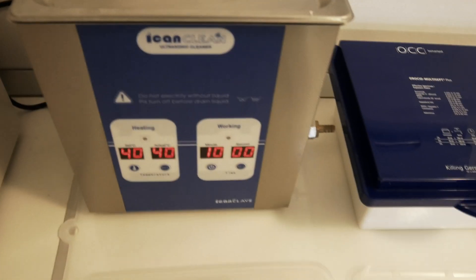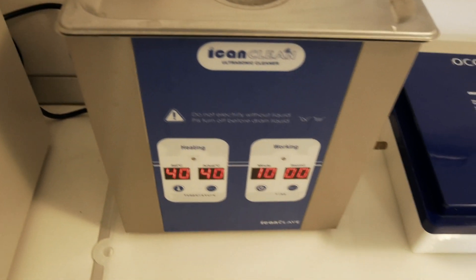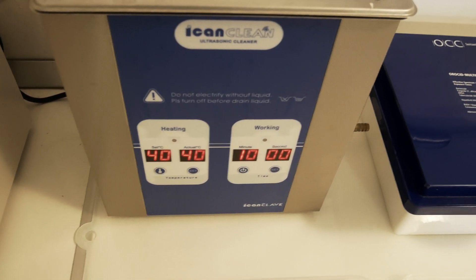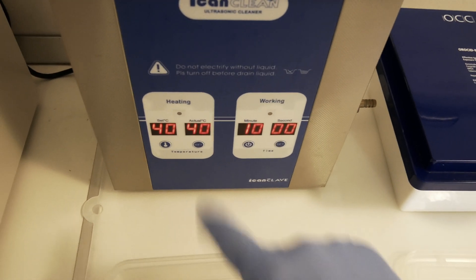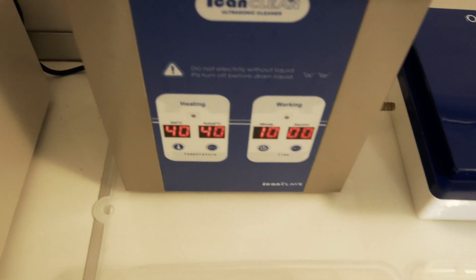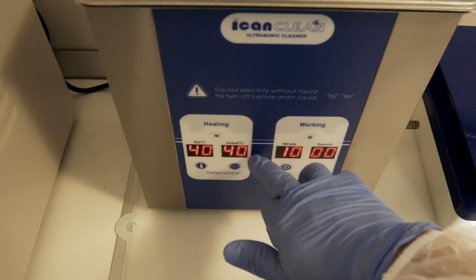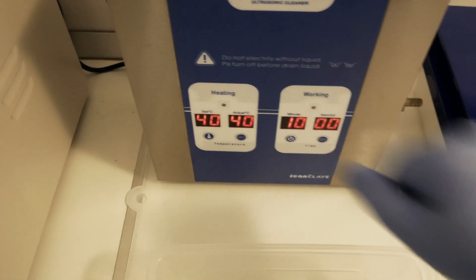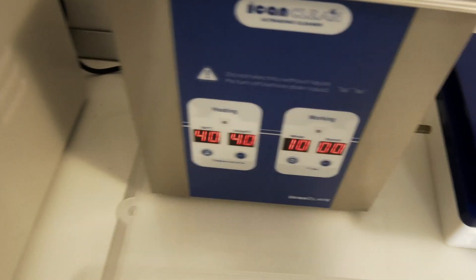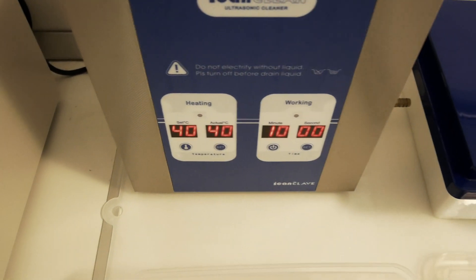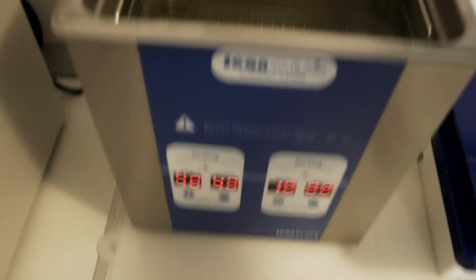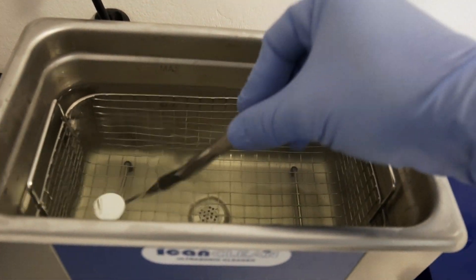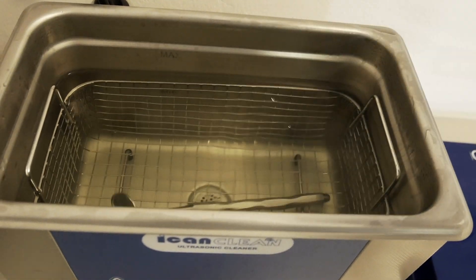It uses an enzymatic cleaner and it's special for use in an ultrasonic cleaner. In this case, I'm using Micro 10 Plus from Ecolab in the concentration the producer specifies. I'm using an ultrasonic cleaner with temperature control. I'm using a 40 degrees Celsius program for 10 minutes. So let's insert the instruments there. When you insert them, be careful not to splatter.